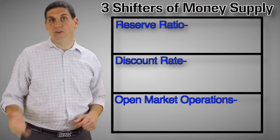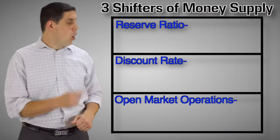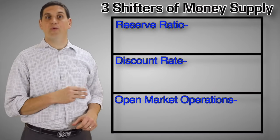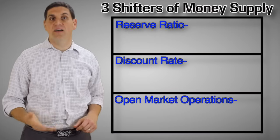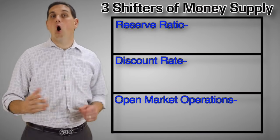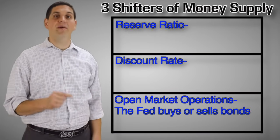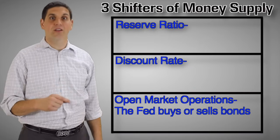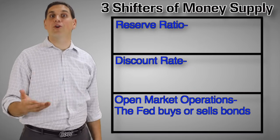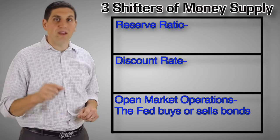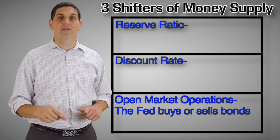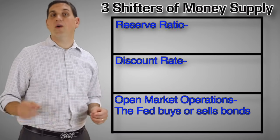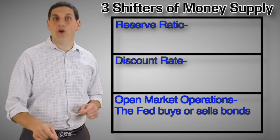Let's go over these in reverse order. Open market operations is the most important one of the three because this is the one that the Fed does the most. Open market operations is when the government central bank buys or sells government bonds to private commercial banks. These are government-issued bonds, sometimes called treasury bonds or T-bills. Another word for bonds that you might see is the word securities.